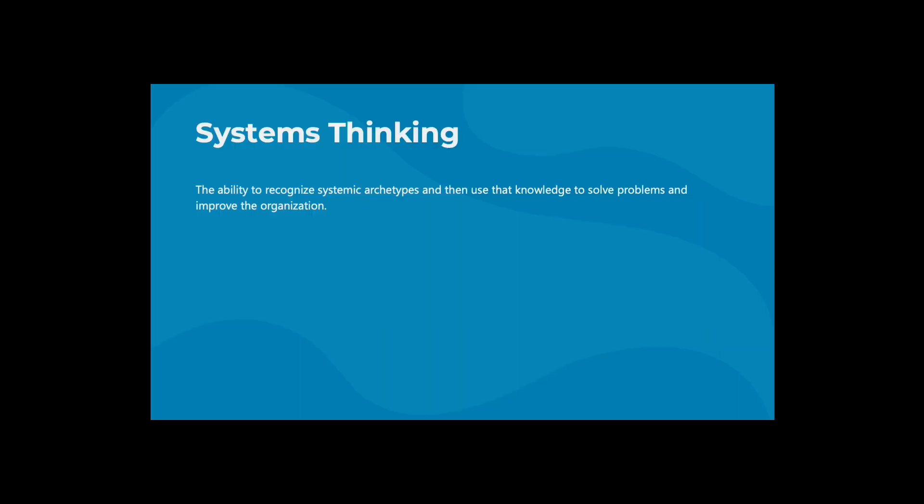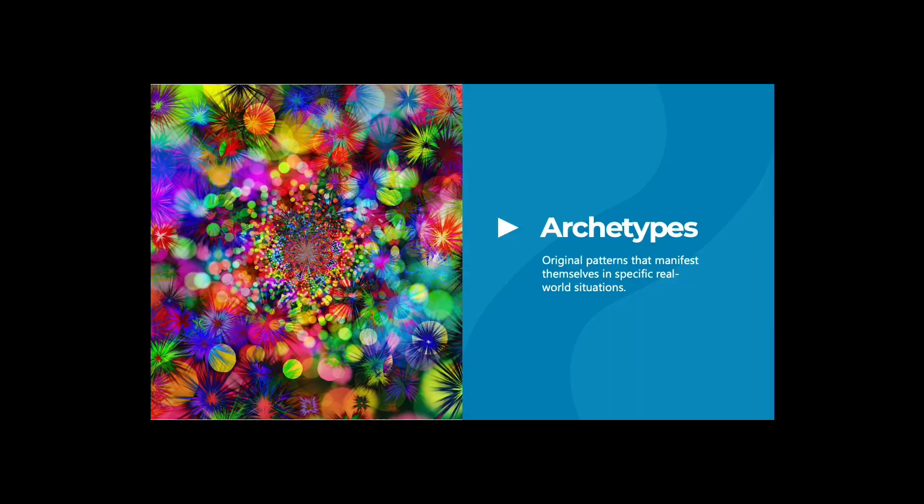To summarize, systems thinking recognizes patterns in these relationships and then uses that knowledge to solve problems and improve an organization, a church, a family, or just your life. We call these patterns archetypes. The word archetype comes from the Greek. It combines two roots, meaning first and pattern. And these original patterns manifest themselves in specific real-world situations.